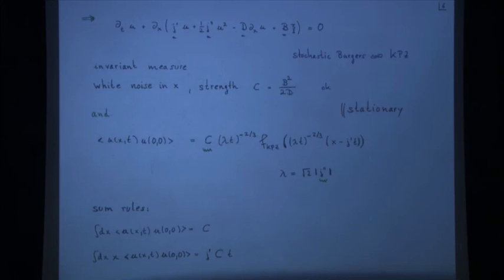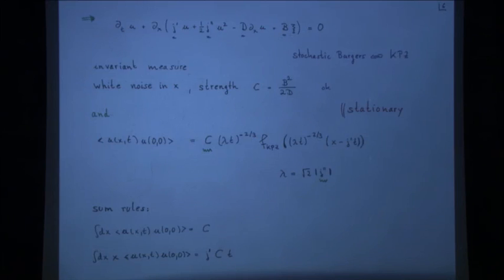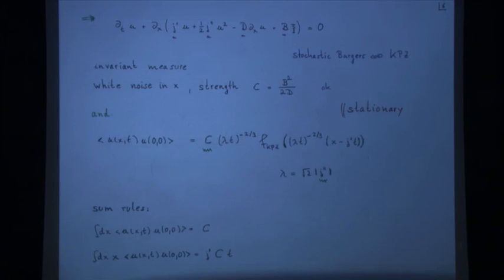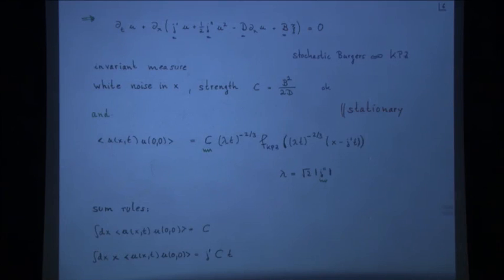So I've arrived at the KPZ equation, or stochastic Burgers equation. You can verify that spatial white noise is the stationary measure for this case. What we know is that if I look at the UU correlation, for long times and large x, it will be of scaling form with the universal KPZ scaling function. There's a non-universal factor C in front, proportional to the second derivative of the current — the strength of the nonlinearity. The noise is generated by deterministic chaos — that's at least the generic belief, and I think it's actually quite correct.